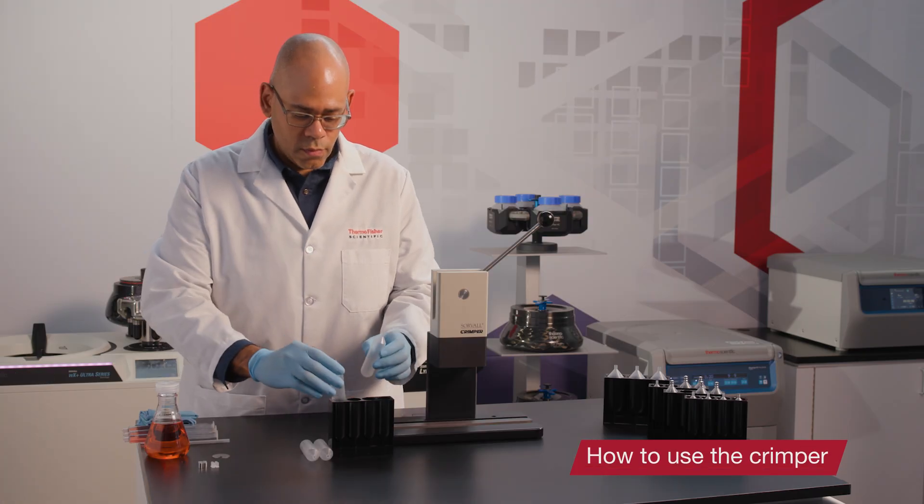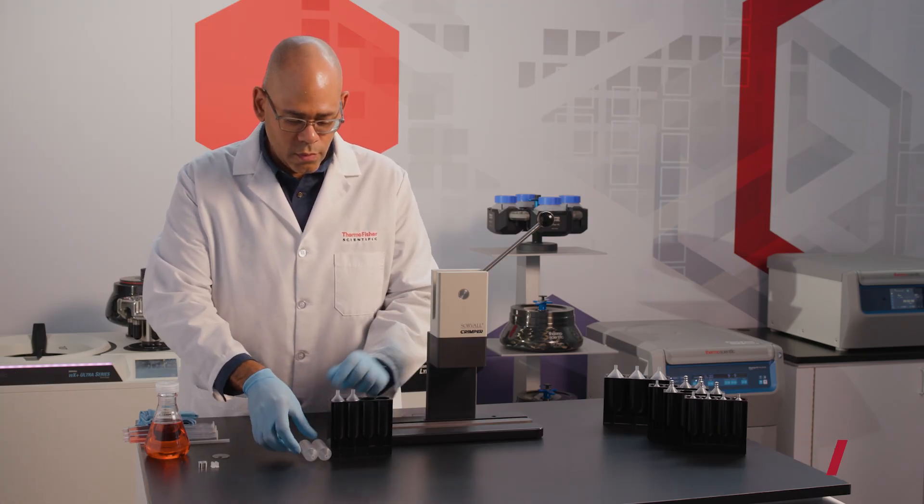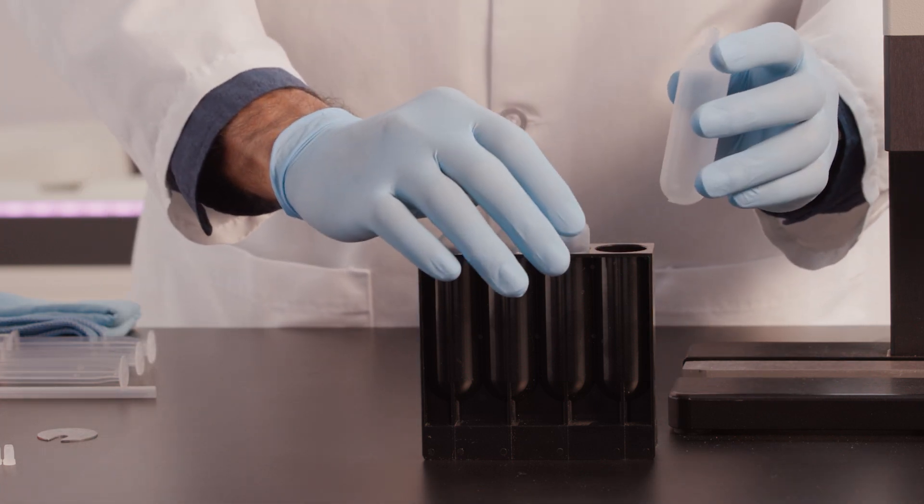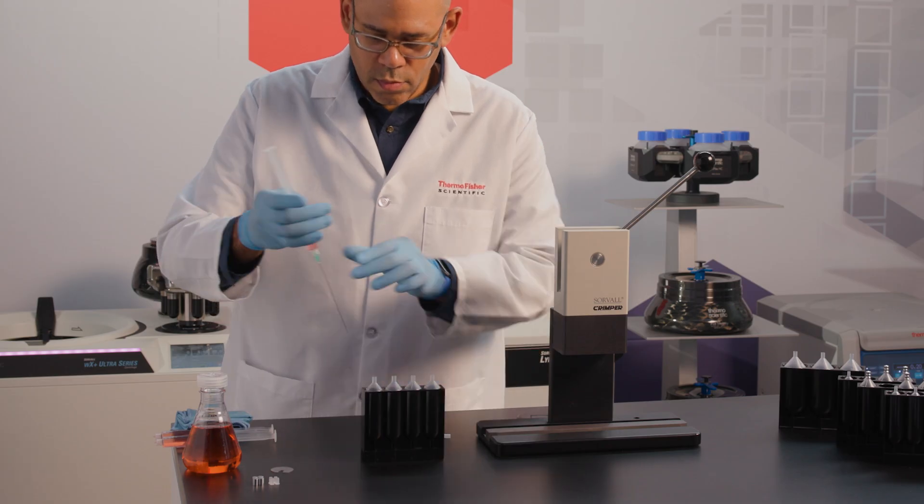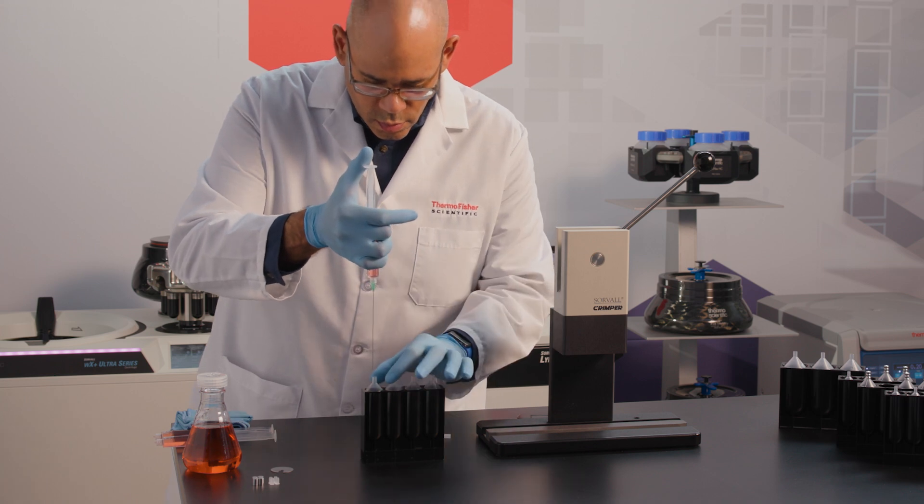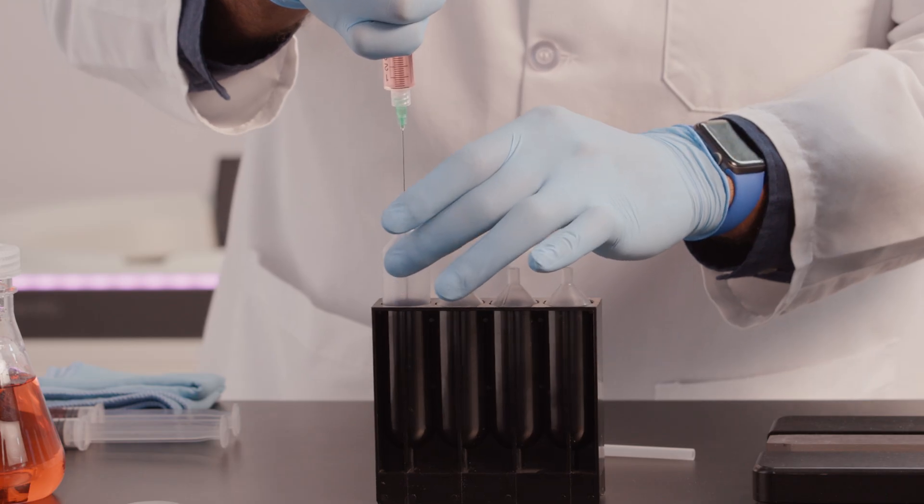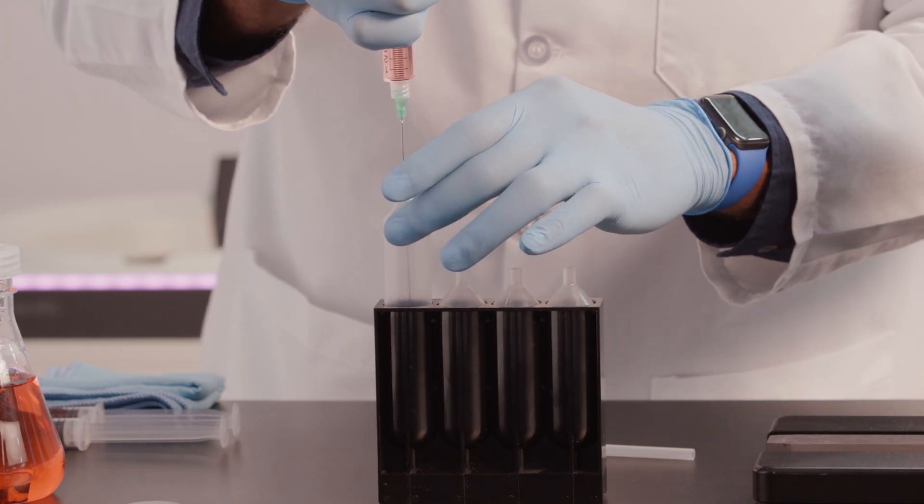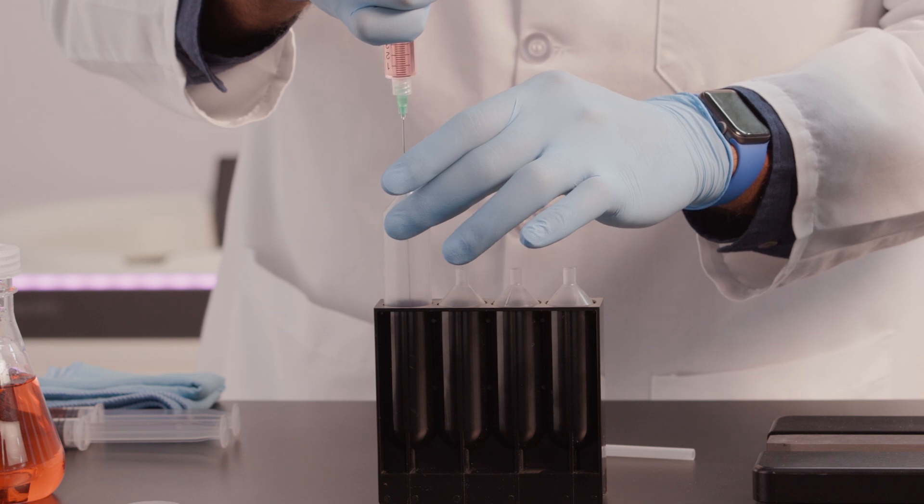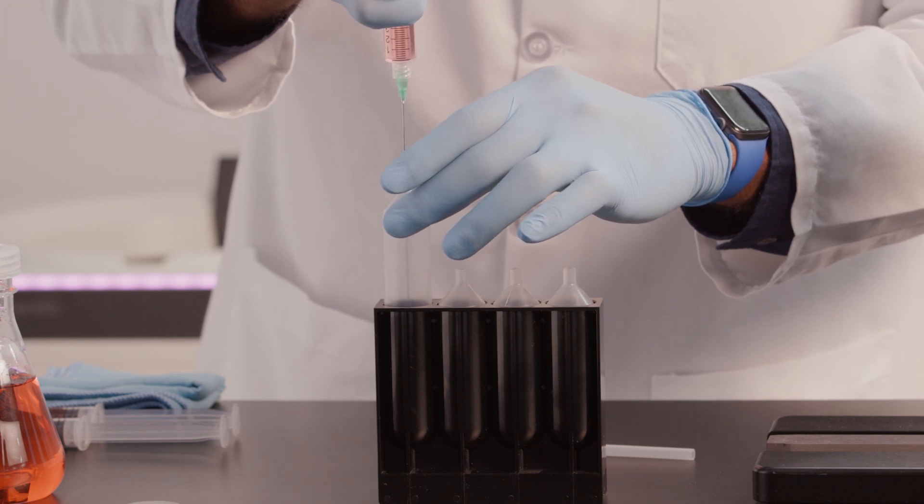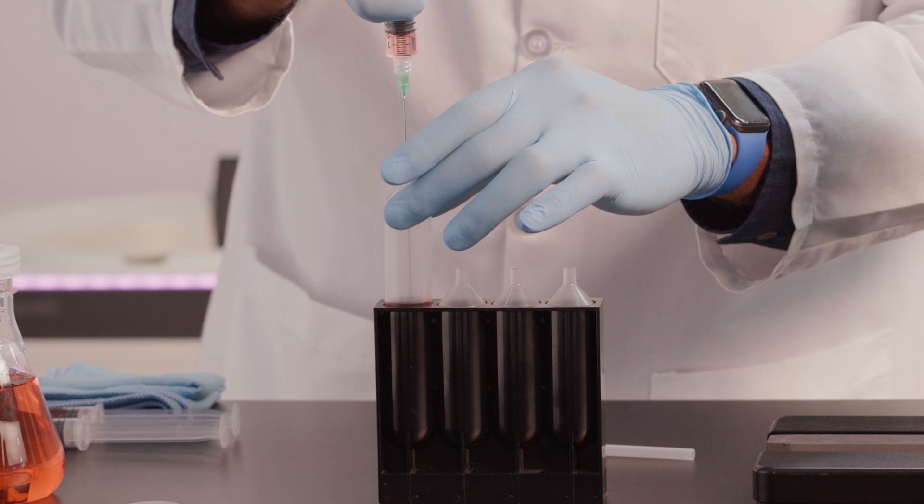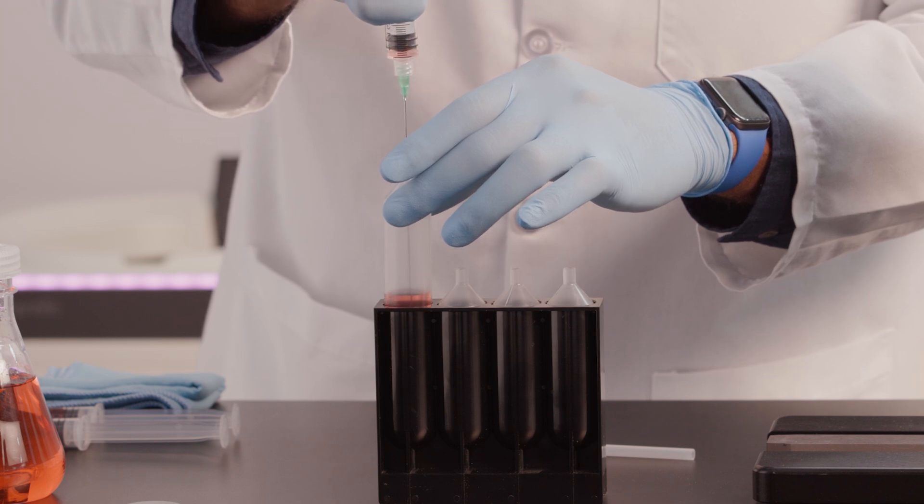To start, place your tubes into an appropriately sized tube rack. Add aqueous solutions or homogeneous mixtures of sample and gradient reagents to the tubes using a syringe or a pasteur or transfer pipette. Load the solution at a moderate rate to avoid forming bubbles on the inside wall of the tube.